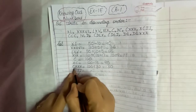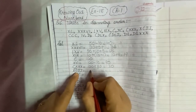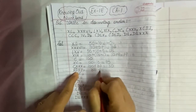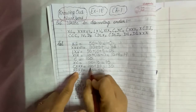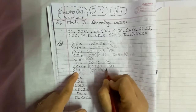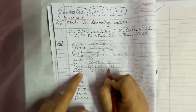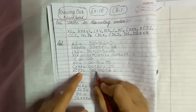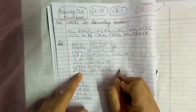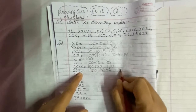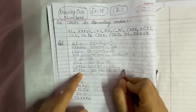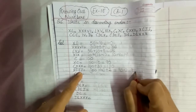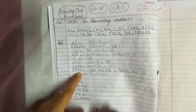The next one is XCII. XC means 100 minus 10, which is 90, and double I means 2. So 90 plus 2 gives us 92.